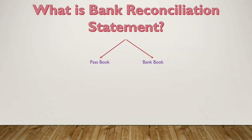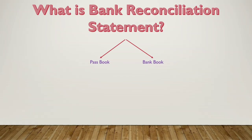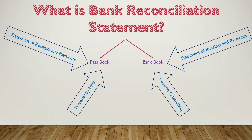The next thing is Bank Book, which is also known as Cash Book, and it is usually the Bank column of the Cash Book. Cash Book or Bank Book is usually studied before studying Bank Reconciliation Statement, so most of you may already know about it. A Cash Book is a book in which receipt and payment of money are recorded. Unlike Passbook, which is prepared by the bank, Cash Book is prepared by the customer of the bank — that is, the business. Cash Book has two columns: Cash column and Bank column. In Bank Reconciliation Statement, we are only concerned with the Bank column, because Bank Reconciliation is only about transactions related to the bank.